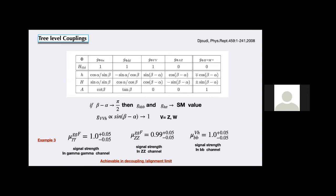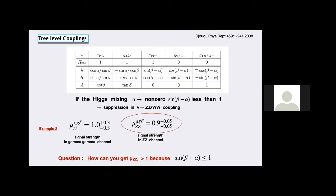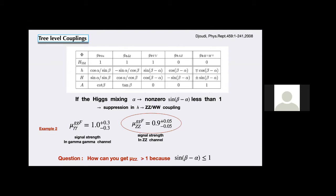This condition — example three — can be satisfied easily: SUSY is decoupled and heavy scalars sit around 500–600 GeV. For the second situation where signal strength is slightly reduced, since the coupling is proportional to sin(β−α) and the signal strength goes as sin²(β−α), this is also possible. But for the first option where μ(ZZ) > 1, since sin²(β−α) ≤ 1 always, how can you get a signal strength greater than one?